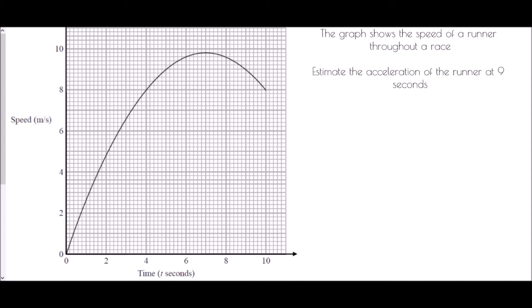Our third question asks us to estimate the acceleration of the runner at nine seconds. Again, this is an instantaneous rate of change at a specific instant. We mark nine seconds on the graph, then draw a tangent line — and our line is just touching the curve at the marked point, which makes it a good enough tangent. We then need to form a triangle in order to estimate the gradient.